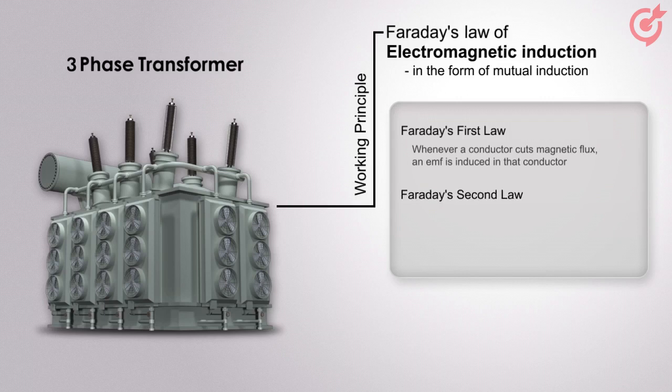The second law states that the magnitude of the induced EMF is equal to the rate of change of flux linkages, which is given by E is equal to dphi by dt, where E is the EMF, phi is the flux, and t is the time.